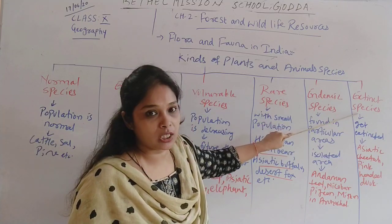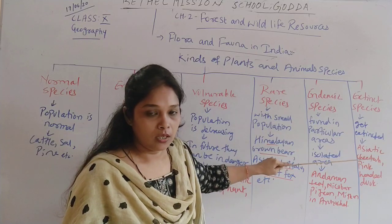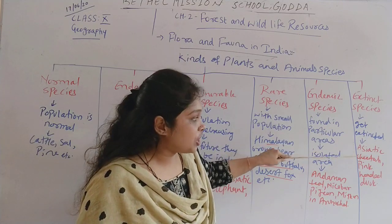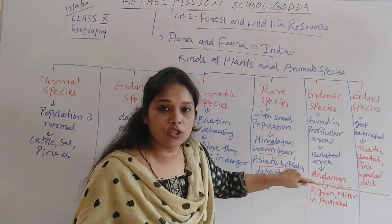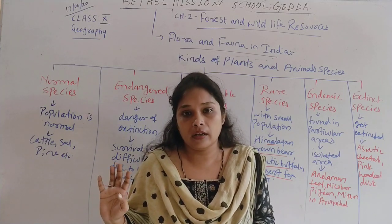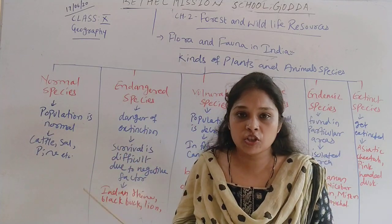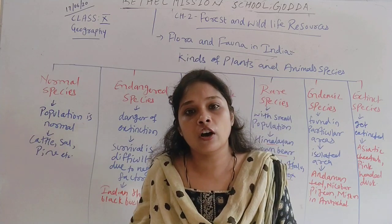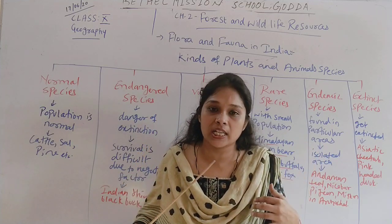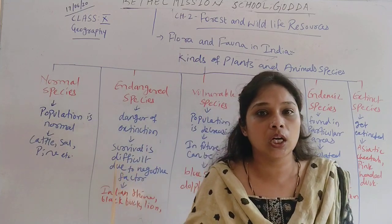The last category is extinct species — these have already gotten extinct or their numbers are dropping to extinction level. Examples include the Asiatic cheetah and pink-headed duck, whose population is decreasing day by day and will be fully extinct very soon. We need to save these animals and plants because they are rare and unique species that we have in our world.